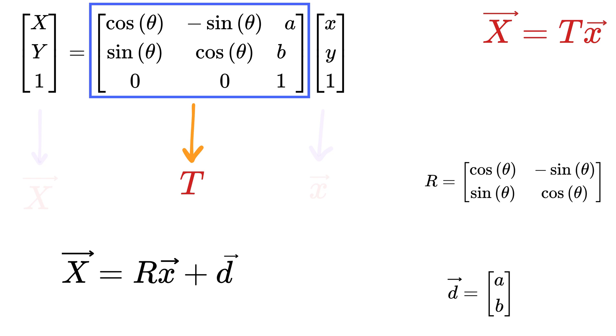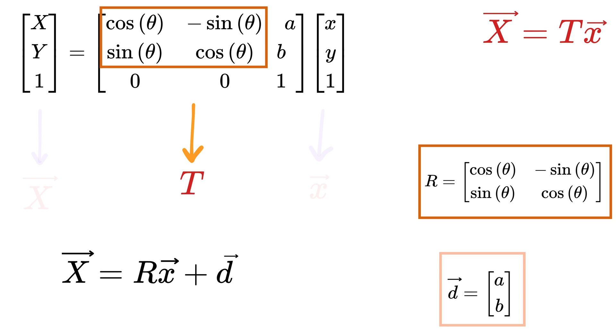Each T matrix is a three by three matrix that combines rotation R and translation D. The matrix looks like this. The rotation matrix R is in the top left 2 by 2 block. The translation vector D is in the top right 2 by 1 column. Then the bottom row is 0, 0, 1.